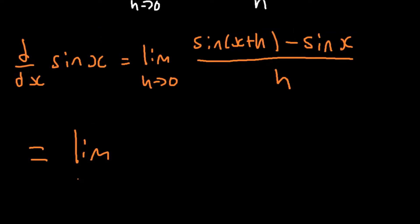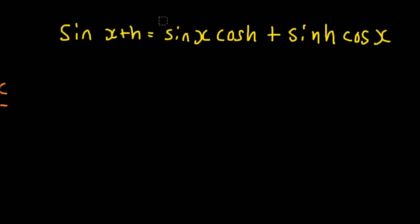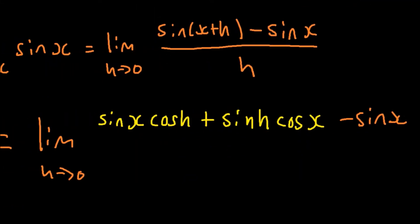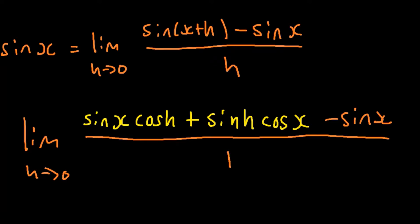Substituting the identity in, it becomes the limit as h approaches zero, sine of x cos of h plus sine h cos x minus sine x all divided by h.